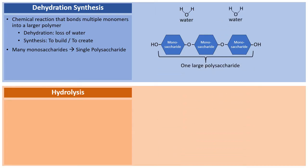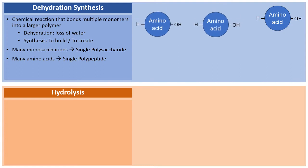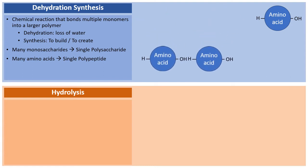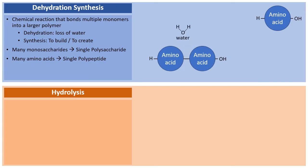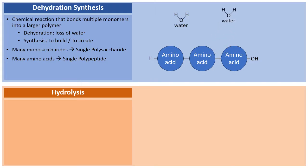In the world of proteins, the monomers are called amino acids. Two amino acids are brought together, the two H's and the O form water, water is removed, and the amino acids are bonded. Adding the third amino acid: water is removed and all three amino acids are bonded as one larger polypeptide, which would eventually twist, fold, and wrap to become a protein.